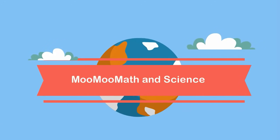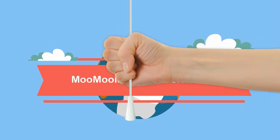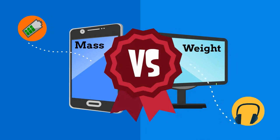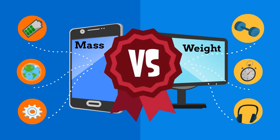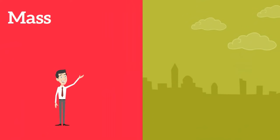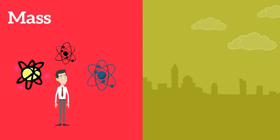Welcome to MooMooMath and Science. In this video I'd like to discuss, doesn't mass and weight measure the same thing? Close but not really. The mass of an object is a measure of the number of atoms in it. The SI unit for mass is the kilogram.